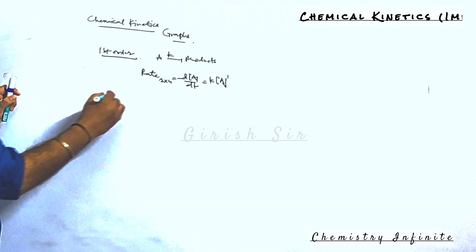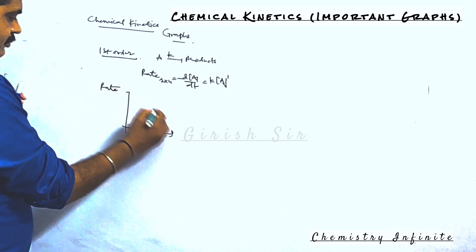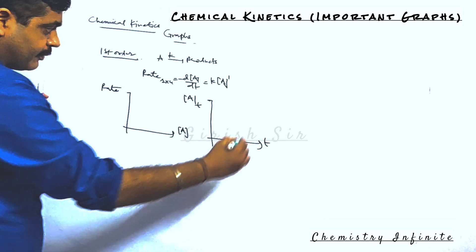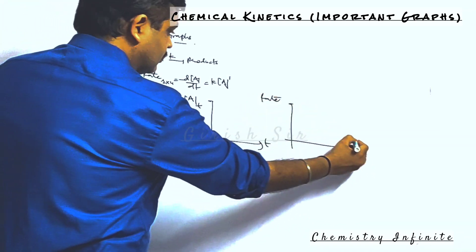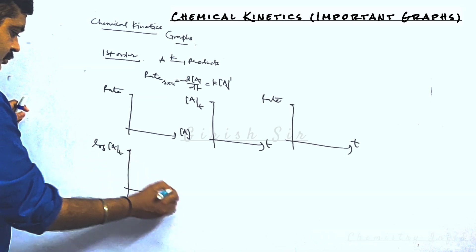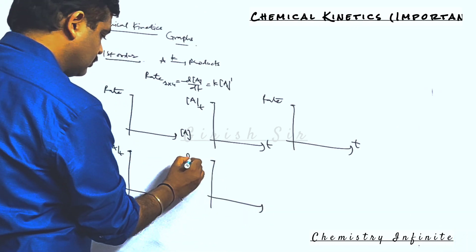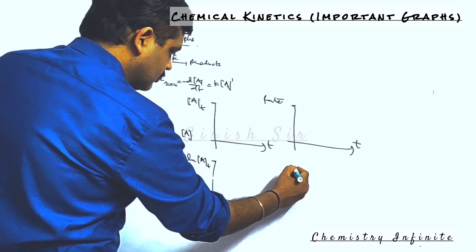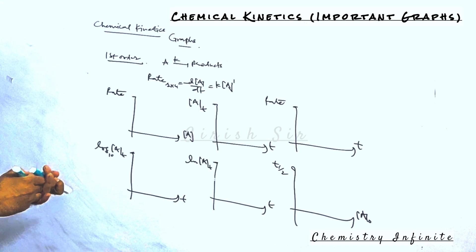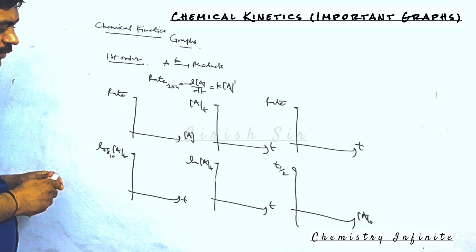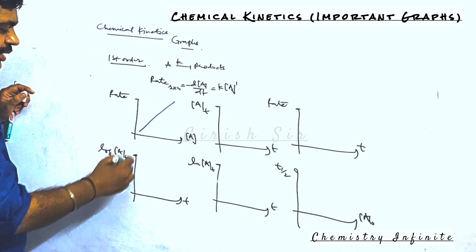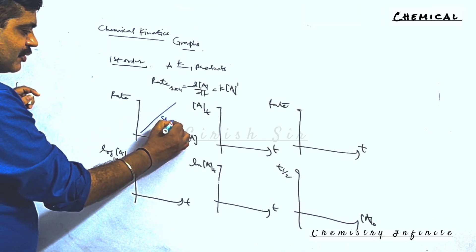This is the differential rate law for a first-order reaction. The first graph is rate of the reaction versus concentration of the reactant. The rate directly depends on concentration of the reactant, so this is a straight line that passes through the origin with a slope equal to k.